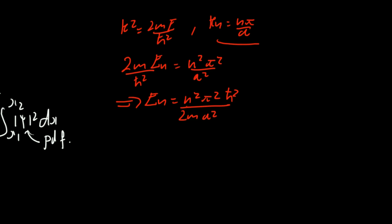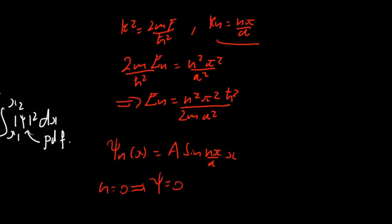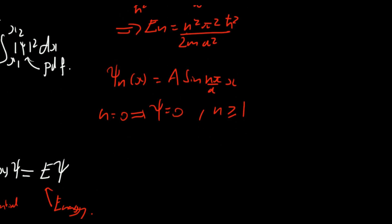We've now found that there are infinitely many solutions, one for each n. The wave functions are psi n of x equals A sine of n pi over a times x, each being a different state the particle can occupy with a well-defined energy En. We note that n equals zero must be excluded because it gives psi equal to zero everywhere, so n is greater than or equal to one. Using h bar equals h over 2pi, we can simplify the energy to En equals n squared h squared over 8ma squared.